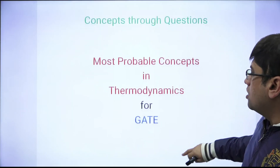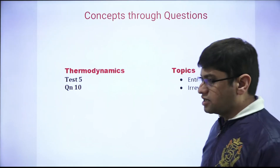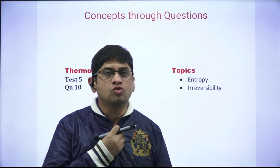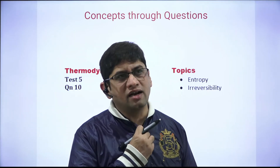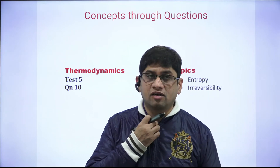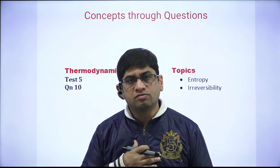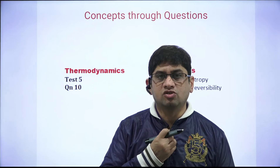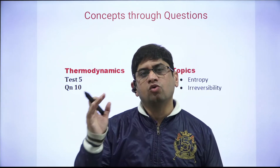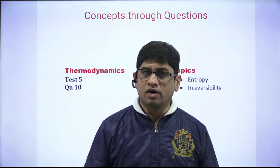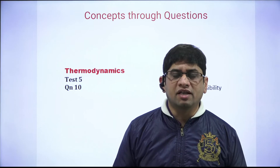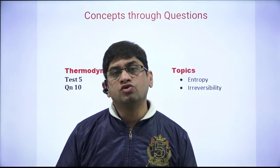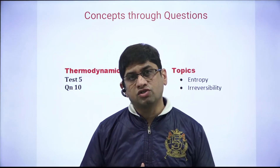This is the fifth test on thermodynamics. Spend 15 to 20 minutes on 10 questions, write your answers, and check how many you get correct. A score of 7 correct out of 10 with 0 incorrect is the expected target. These are GATE-oriented questions — neither too hard nor too easy. Detailed solutions are available on Nimbus Learning.